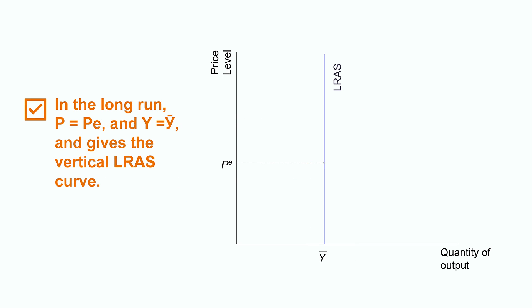But in the long run, expectations catch up to reality. P is equal to p e, and therefore y equals to y bar, giving us the vertical long run aggregate supply curve at y bar.